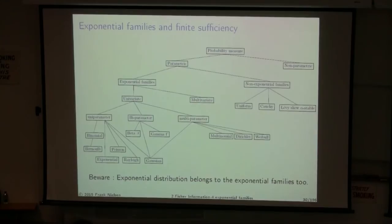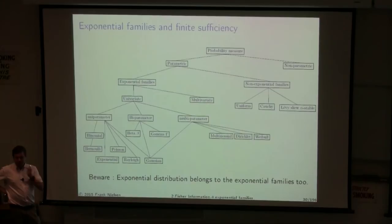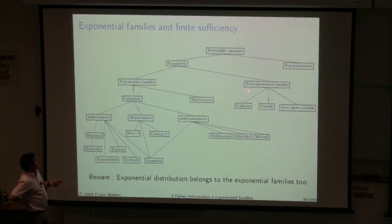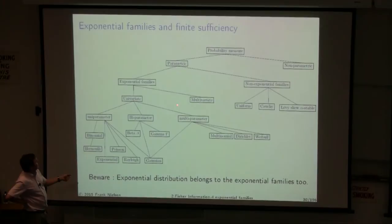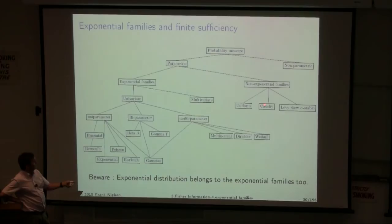Probability distributions with finite sufficient statistics are called exponential families. The exponential distribution is one member — not to be confused with the family itself. Exponential families include Gaussian, Rayleigh, exponential, Bernoulli, Poisson, Dirichlet, and Weibull distributions — both discrete and continuous. Non-exponential families include the uniform distribution, the Cauchy distribution (which has non-finite moments), and alpha-stable distributions.